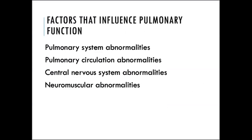Pulmonary system abnormalities include structural abnormalities, airway inflammation or obstruction, alveolar-capillary membrane disorders, and atelectasis. Pulmonary circulation abnormalities include pulmonary embolism — a clot — or pulmonary hypertension. Central nervous system abnormalities such as stroke, trauma, or spinal cord injury can affect breathing — for example, a spinal cord injury may paralyze the diaphragm, preventing normal pulmonary function. Other muscular and skeletal abnormalities can also interfere with our ability to regulate breathing.